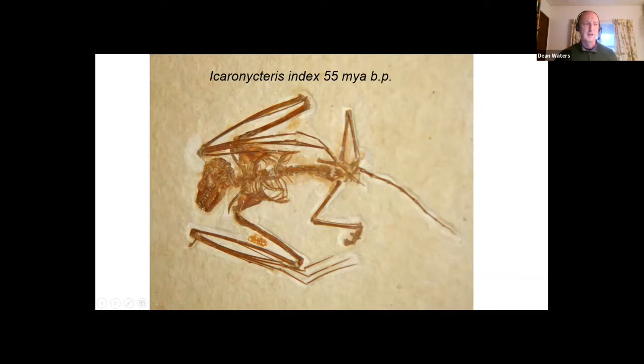Looking at Icaronycteris index, this is a fully formed bat and the oldest bat or bat ancestor that we have. You can see its hand wing here—this little thumb, its wrist, finger bones, forearm, and a little tail. You can even see the joints on its ankles. Bats are slightly odd because their ankles are turned around 180 degrees so their feet effectively face backwards, allowing them to hang on to things.